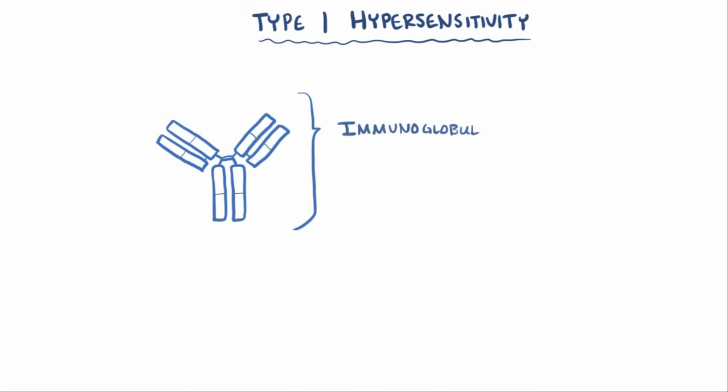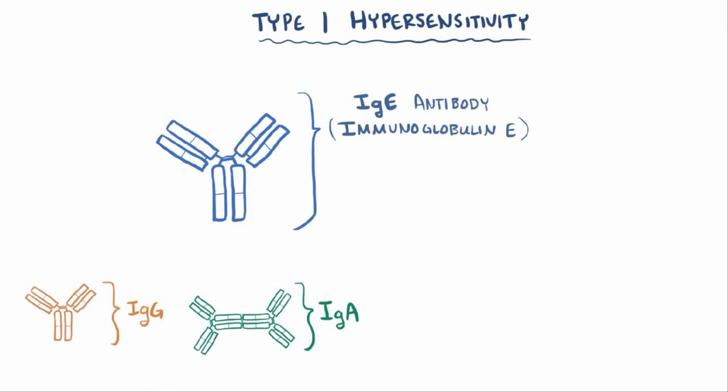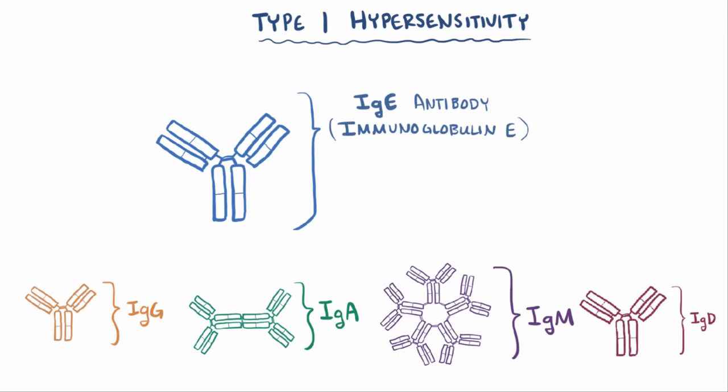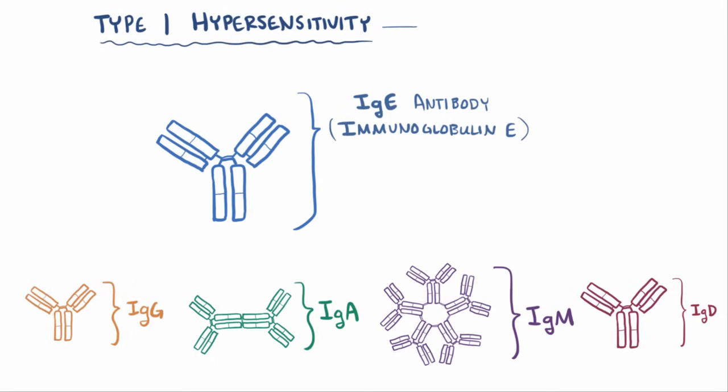the reactions rely on immunoglobulin E or IgE antibody, which is a specific type of antibody, the other major ones being IgG, IgA, IgM, and IgD. So because IgE is involved with type 1 hypersensitivity reactions, they're also called IgE-mediated hypersensitivities. This type of reaction is also sometimes called immediate hypersensitivity, because the reactions happen super fast, on the order of minutes.